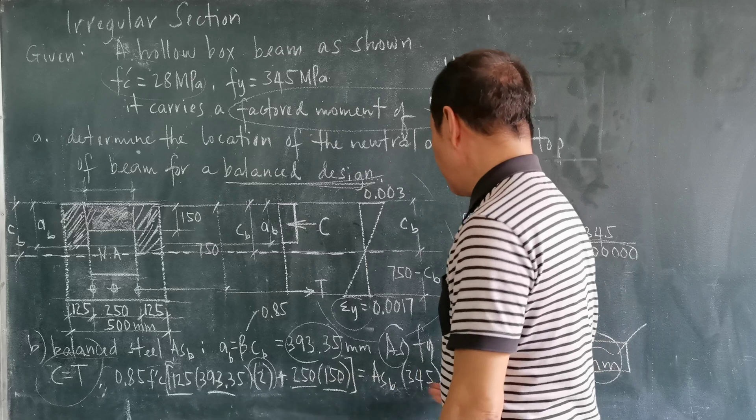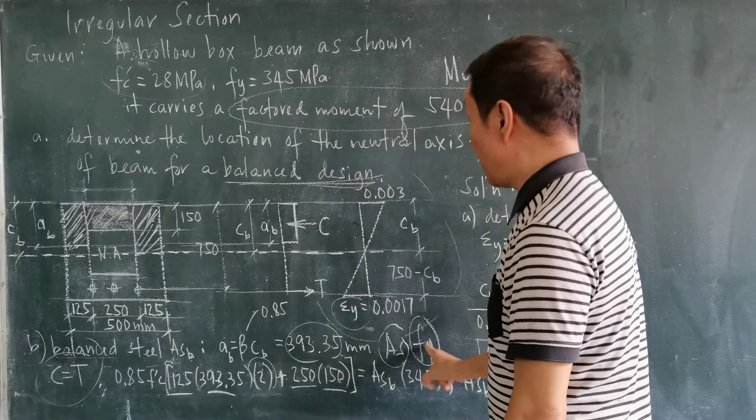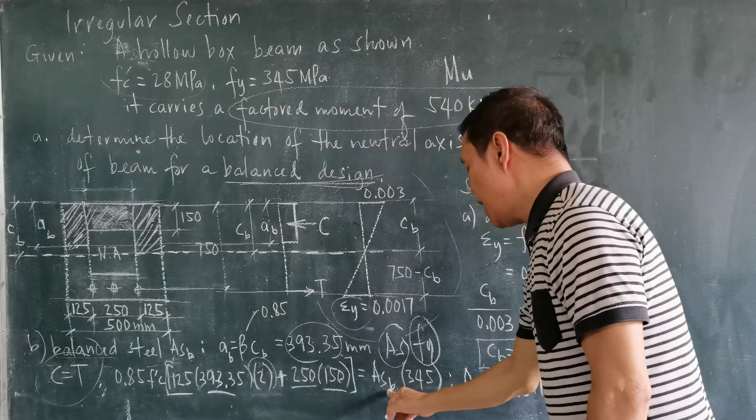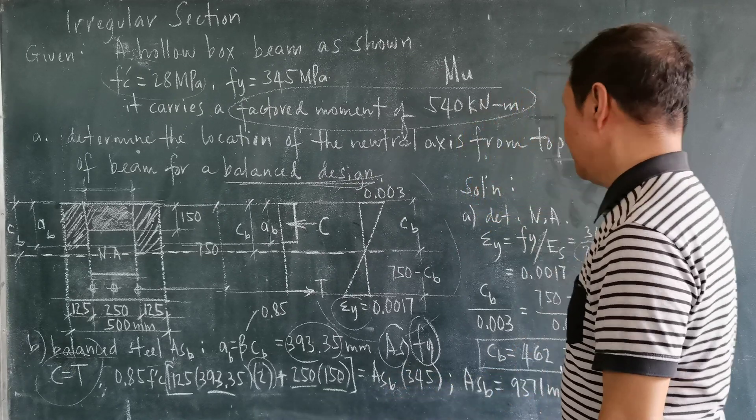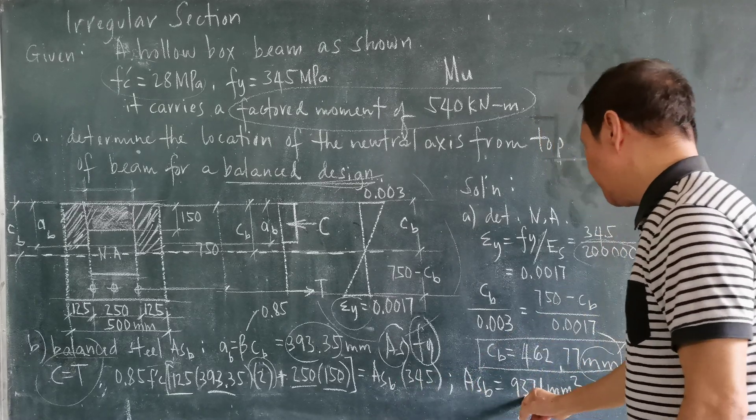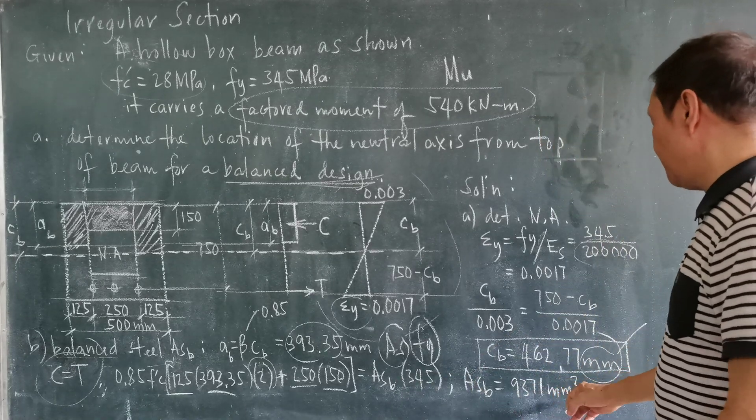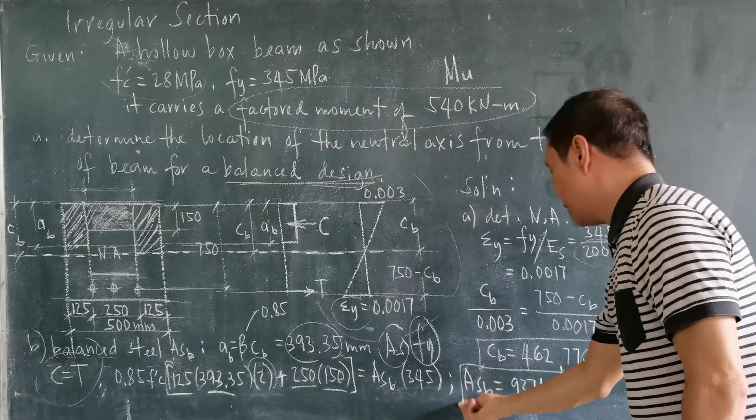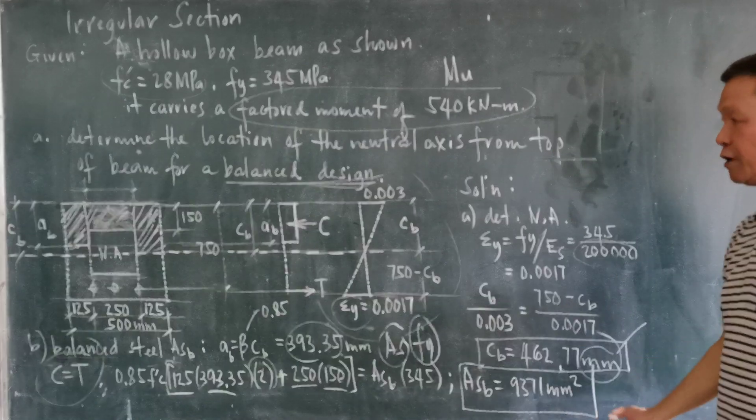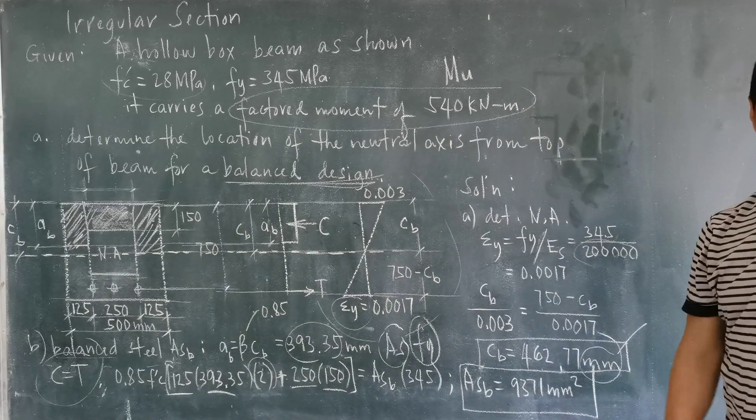So the only unknown now here is the AS at balance design. FY is already given in the problem. And computing this, you'll get now 9,371 millimeter square. So that's now the solution of the two requirements of the irregular section problem.